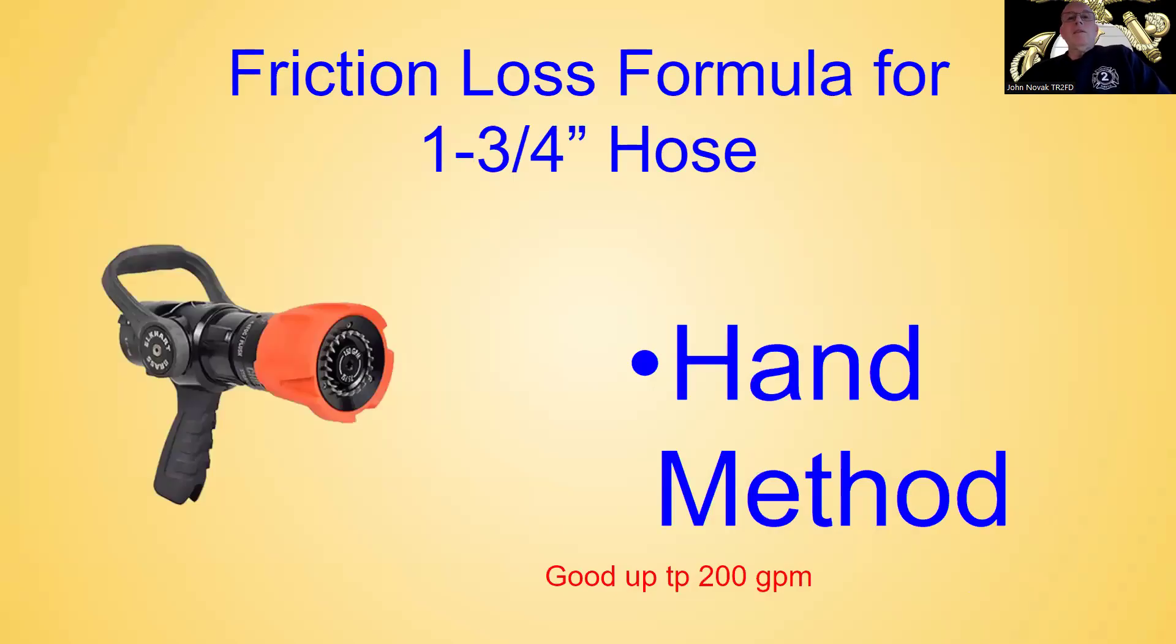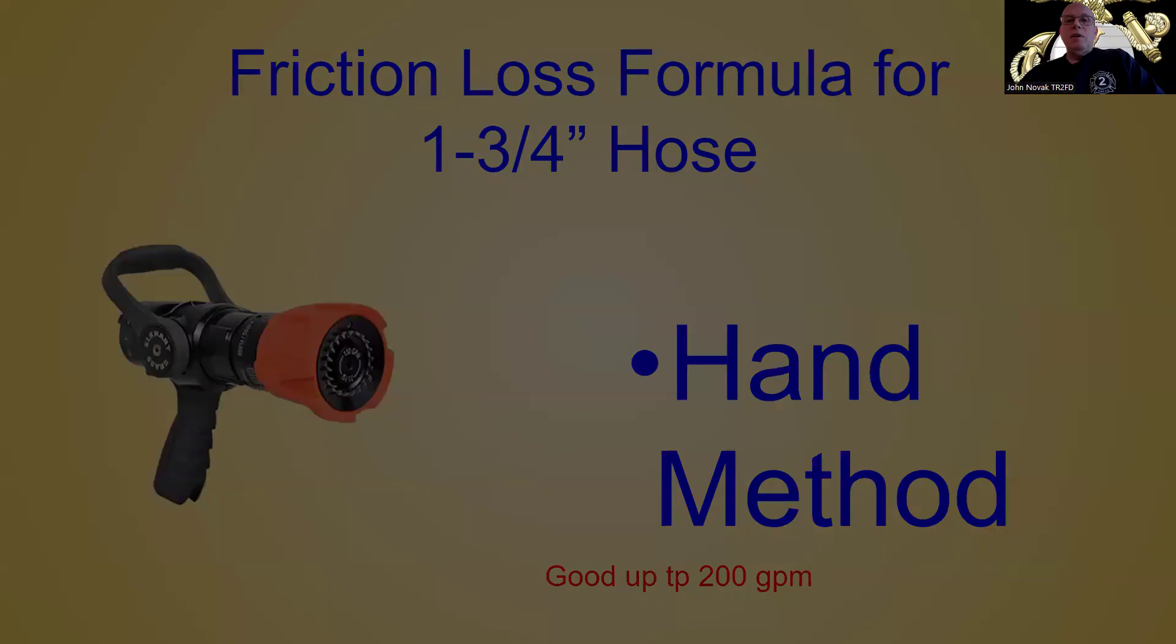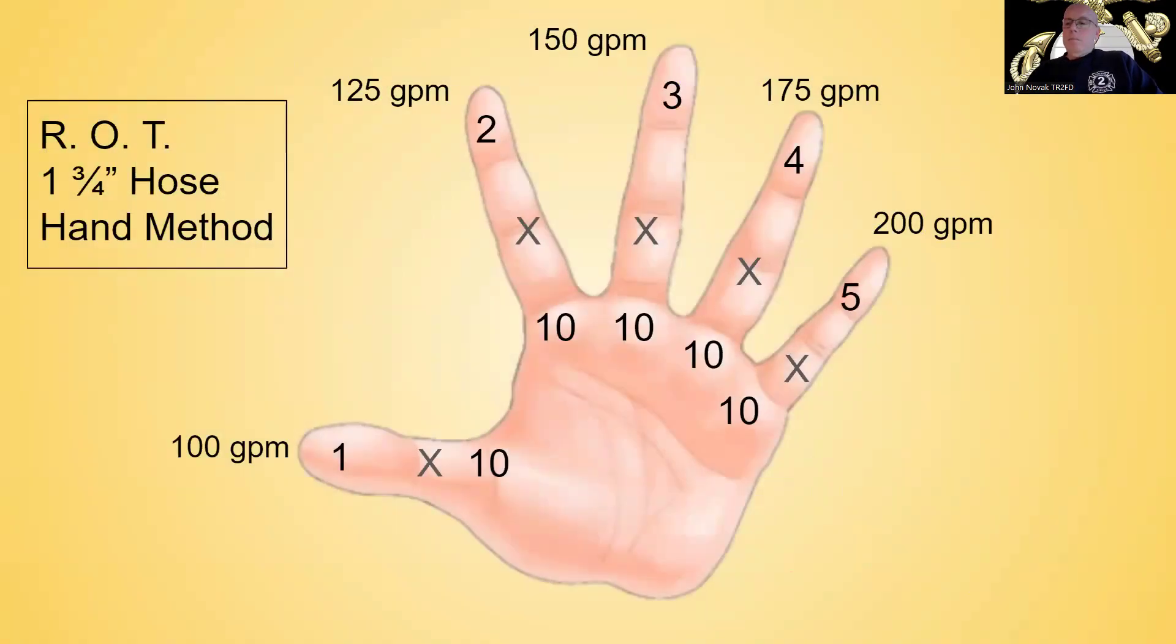By moving to the inch and three-quarter hose friction loss rule of thumb formula, I call it the hand method. It's good up to 200 gallons per minute. So looking at your left hand, we start at our thumb. Our thumb is number one. Index finger is number two. Middle finger is three. Ring finger is four. Our pinky is five. We also assigned different flows to each finger. So the thumb is 100 gallons a minute. It increases by 25 gallons a minute. So index finger is 125. Middle finger is 150. The ring finger is 175. And the pinky is 200.